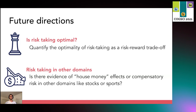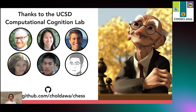So far we've only classified the riskiness of a move. In future work, we want to expand these analyses to answer questions about whether risk-taking is actually optimal, meaning it represents a good trade-off between risk and reward. We also view these results as a good launchpad into risk-taking behavior in other naturalistic settings — for example, is increased risk-taking following a blunder borne out in other domains such as stock trading, sports, or poker. Thanks so much for listening. Special thanks to my lab mates in the UCSD Computational Cognition Lab, and feel free to check us out on GitHub.